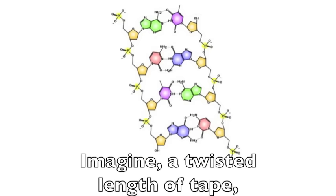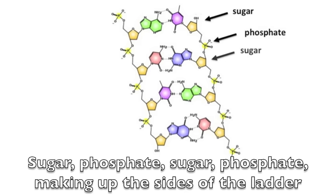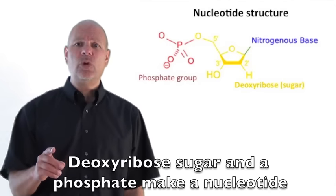Imagine a twisted length of tape with deoxyribosugars on the edges with phosphates. Sugar phosphate, sugar phosphate, making up the sides of the ladder with nitrogenous bases on the inside. With the bases like the rungs, together with deoxyribosugar and a phosphate make a nucleotide.